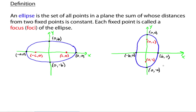For the vertical ellipse, the major axis is vertical — it goes from 0, negative A to 0, A. And then the minor axis goes from negative B, 0 to B, 0. So the major axis is the longer axis and the minor axis is the smaller axis.